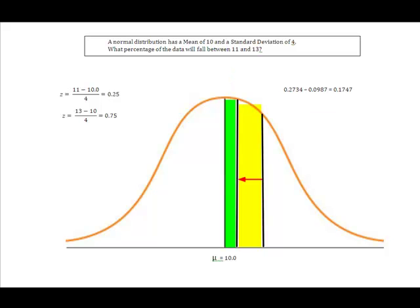So in order to do that, in order to isolate just the area in yellow that I want, the area that falls between 11 and 13, I'm going to take the values I found in my table, I'm going to take the 27.34, I'm going to take away the 0.0987, because that 0.0987 is this area right here.